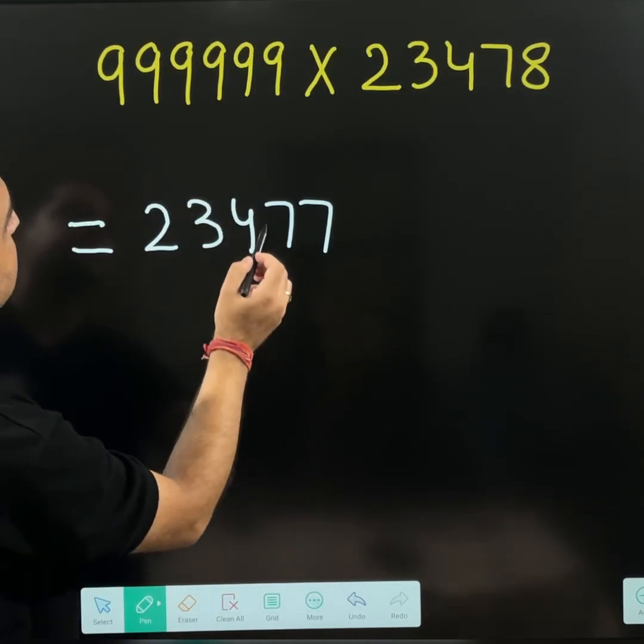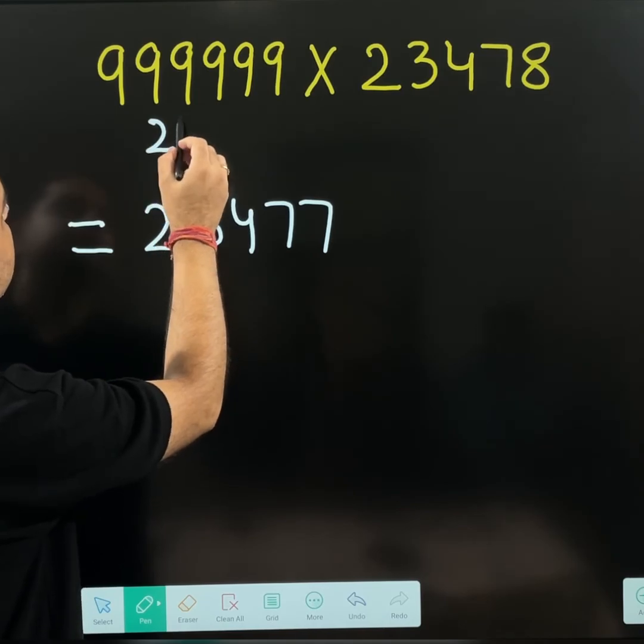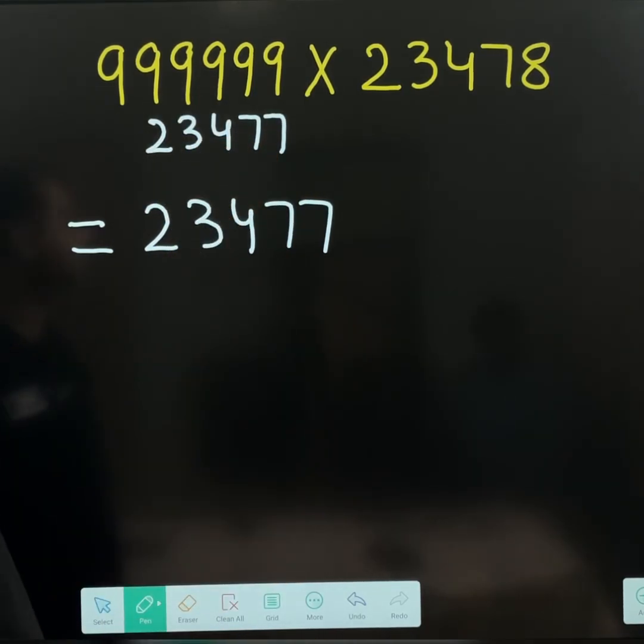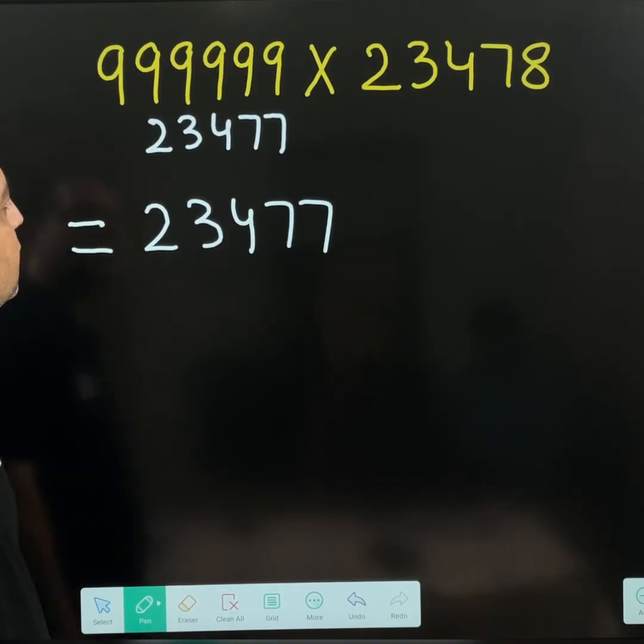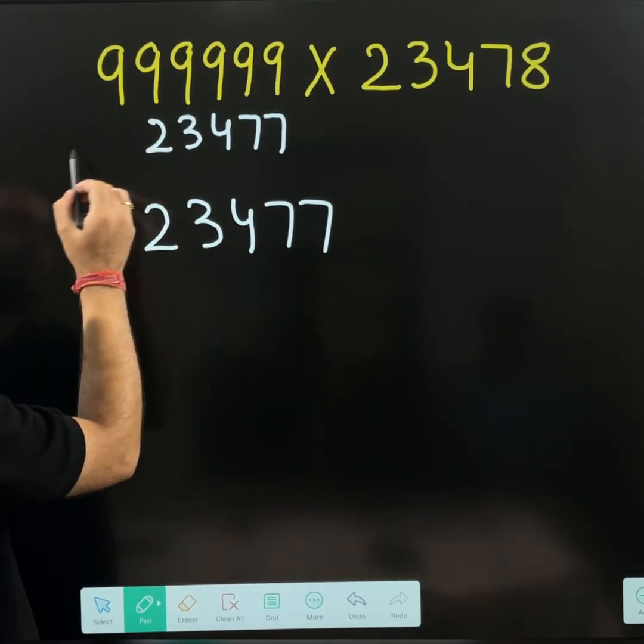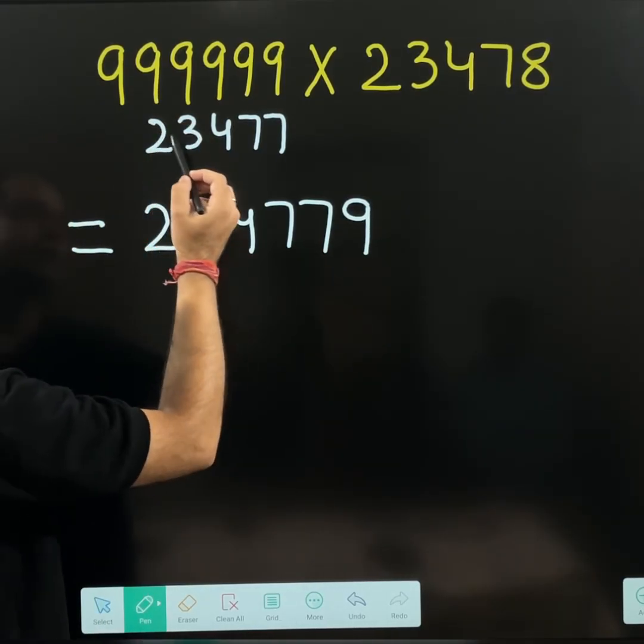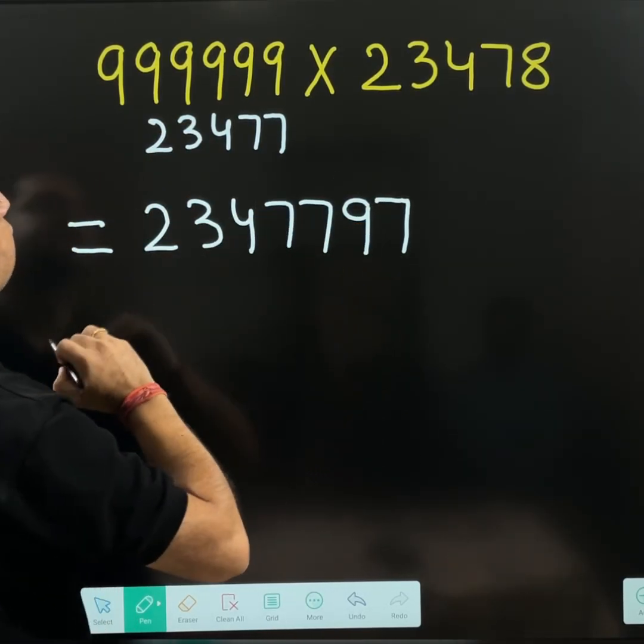Now, subtract the same number 23477. You can subtract this number. This 9 has nothing below it. So it will remain as it is. 9 minus 2, 7, 9 minus 3, 6, 9 minus 4, it is 5.